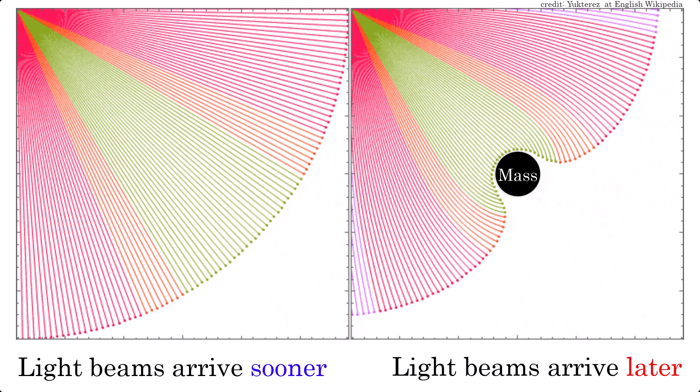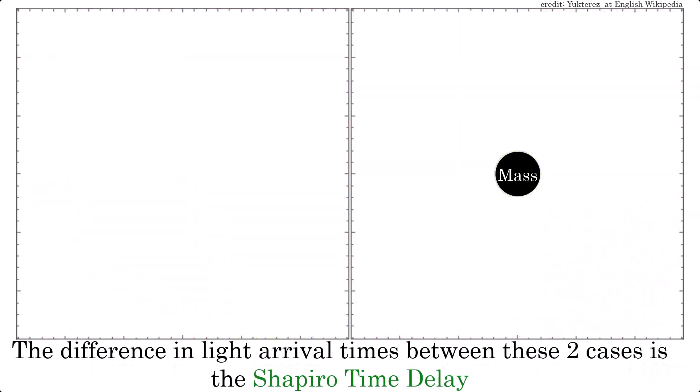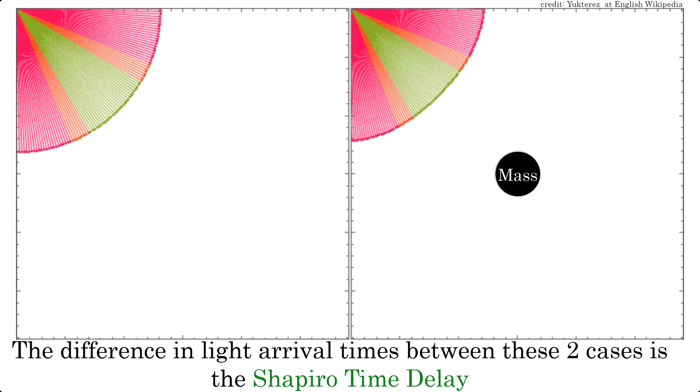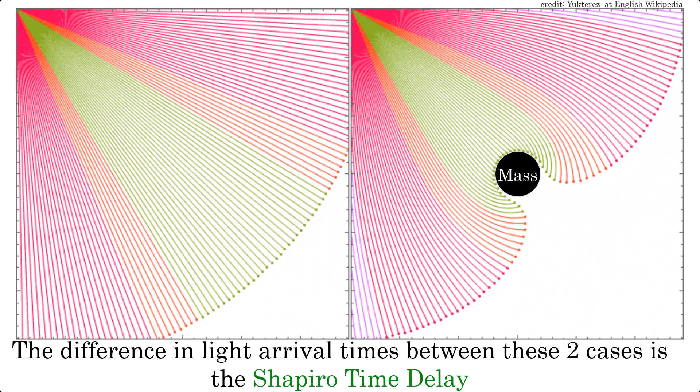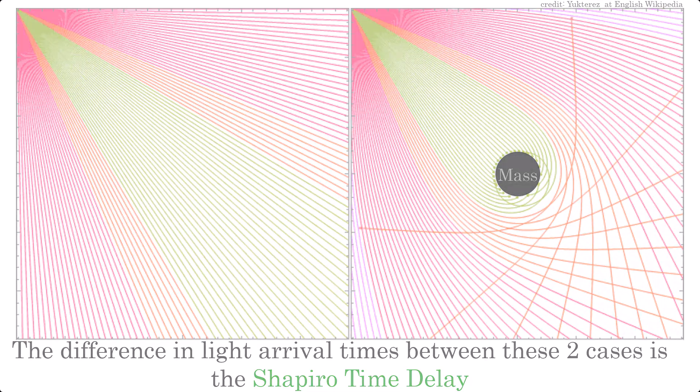The star distorts the photon's path, making it take longer than the straight line through spacetime it would have taken if the star wasn't there, as the speed of light does not vary. And any line other than the straight line between two points is a longer path, and so takes longer to arrive for things moving at a constant speed. This is the Shapiro time delay.